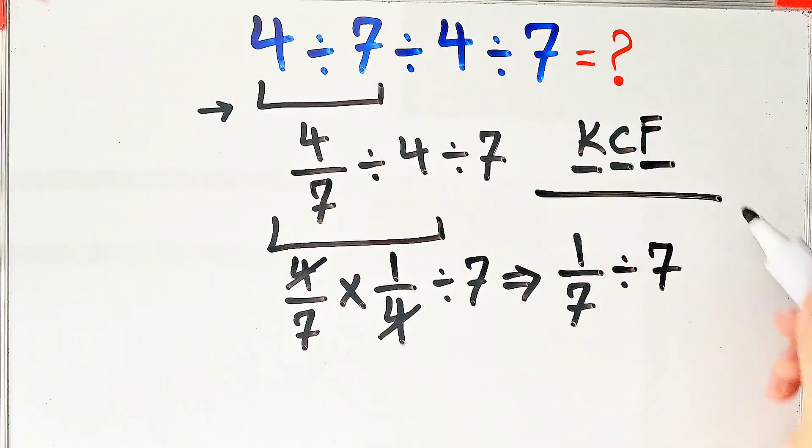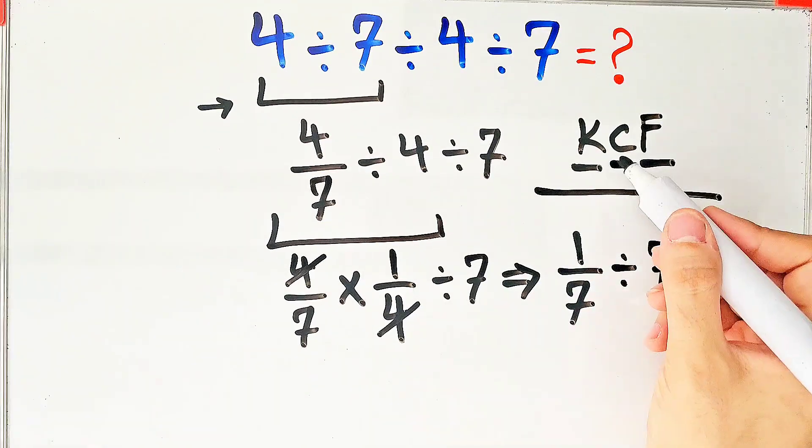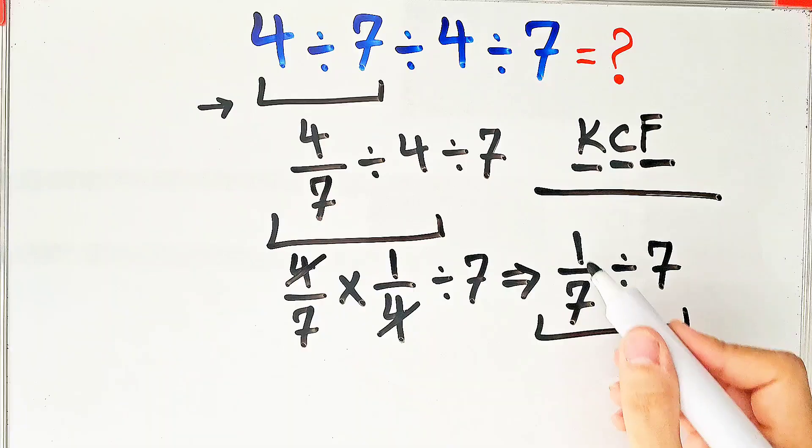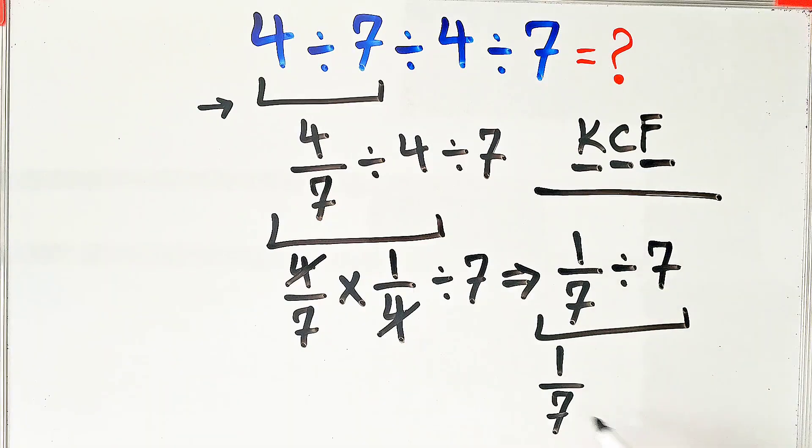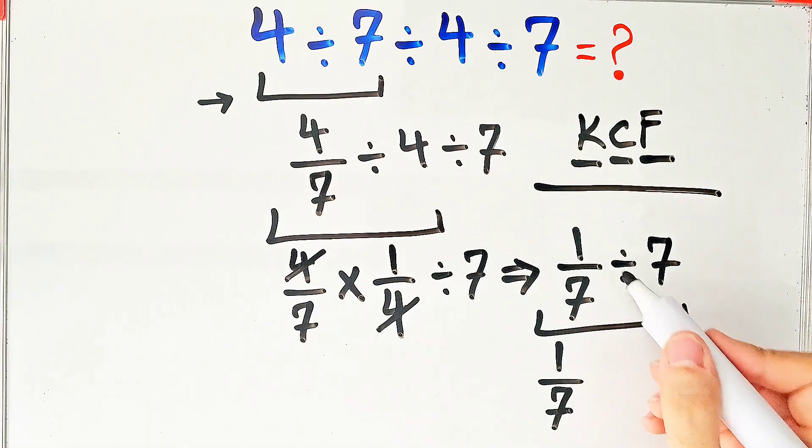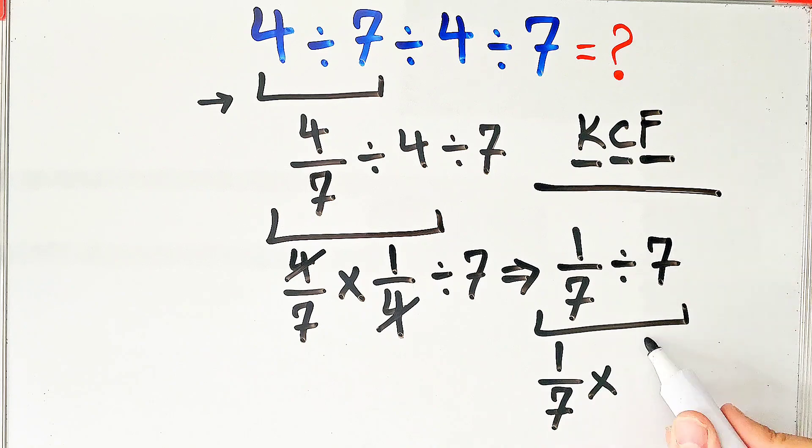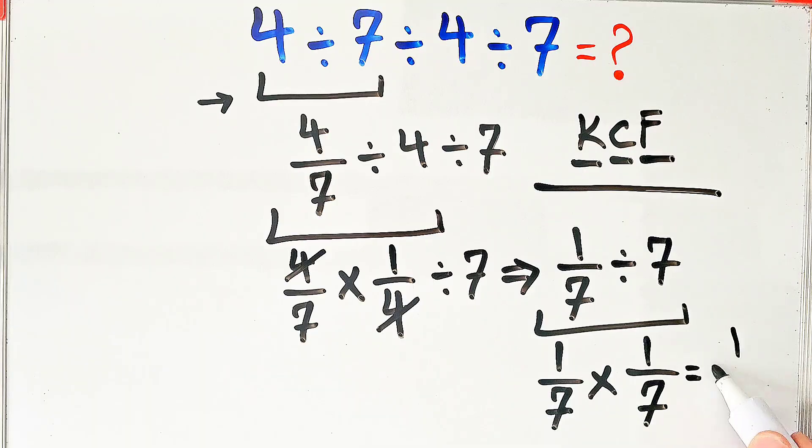According to this rule, we keep the first fraction as it is. After that, we change the division sign to the multiplication sign, and after that, we flip the second number.